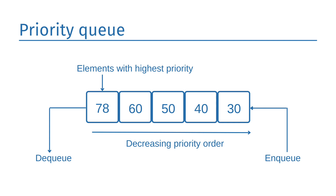In the ascending priority queue, elements can be inserted in arbitrary order but only the smallest element can be deleted first. For example, suppose an array with elements 78, 60, 50, 40, and 30 in the same order. Insertion can be done in the same sequence, but the order of deleting the elements would be 30, 40, 50, 60, and 78.